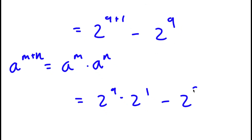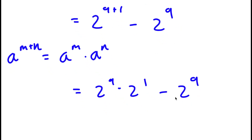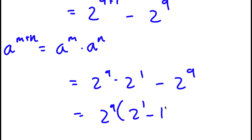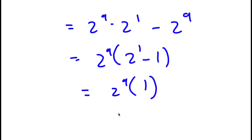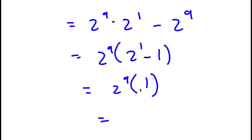Now I have this minus 2 to the power of 9. From here, if I factor out 2 to the power of 9, I get 2 to the power of 9 times 2 to the power of 1 minus 1. And 2 to the power of 1 minus 1, that's simply equal to 1. So now I have 2 to the power of 9 times 1, which is equal to 2 to the power of 9.